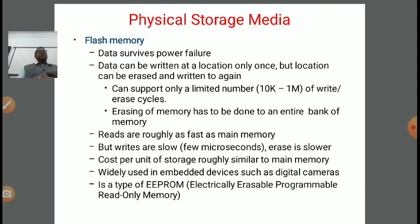So there are some drawbacks to flash memory — why flash memory is not widely used nowadays. The speed is very slow and the capacity is limited. Cost per unit of storage is roughly similar to main memory. It is widely used in embedded systems in electronics, such as digital cameras. It is a type of EEPROM — Electrically Erasable Programmable Read-Only Memory.